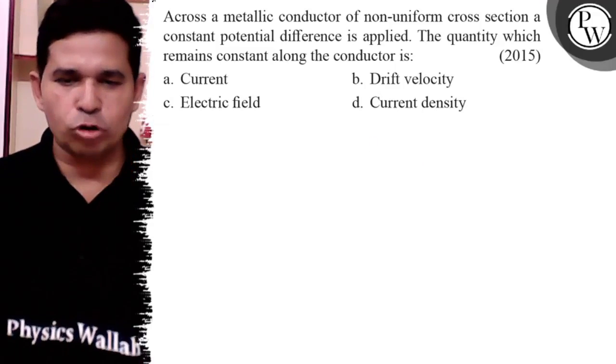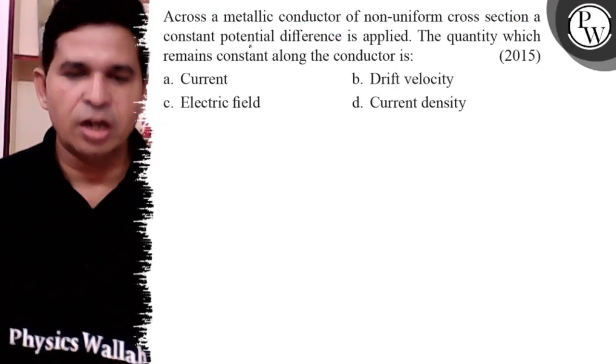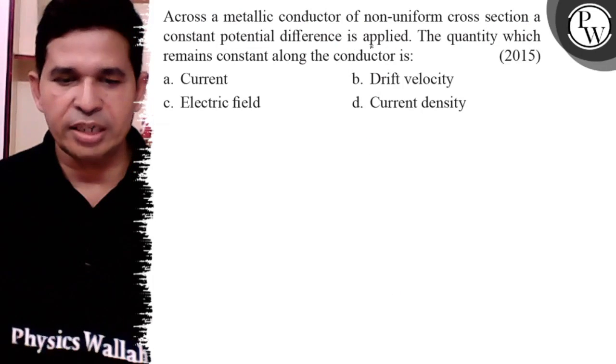Hello Bachchon, let us see this question. Across a metallic conductor of non-uniform cross section, a constant potential difference is applied. The quantity which remains constant along the conductor is: